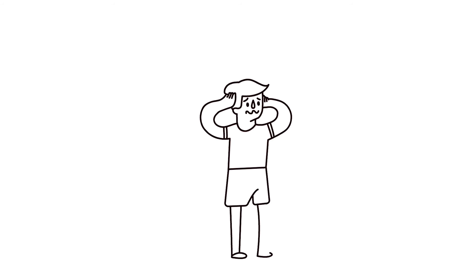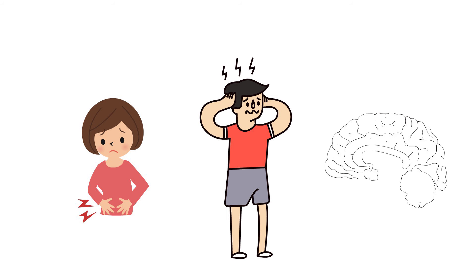But what about all the other stuff that happens when I worry, like a wonky tummy or a fuzzy brain? Have you ever thought about where all that extra strong blood in your arms and legs has come from?